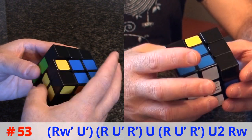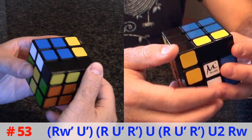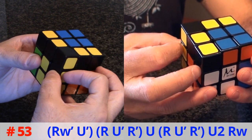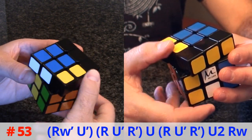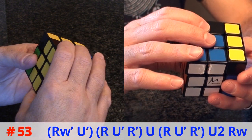It starts with R W prime U prime R U prime R prime U R U prime R prime again U2 right wide.